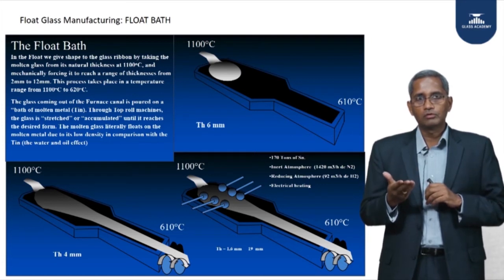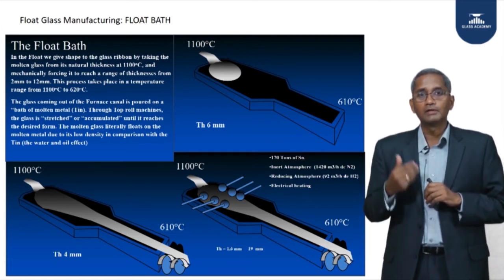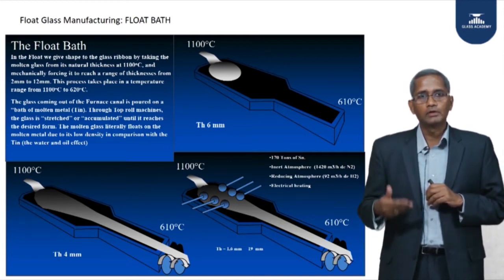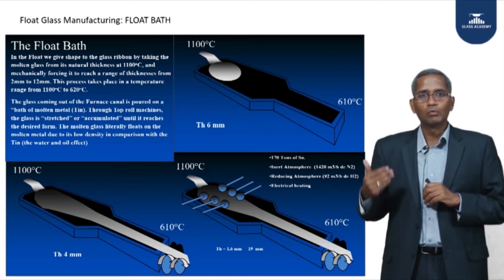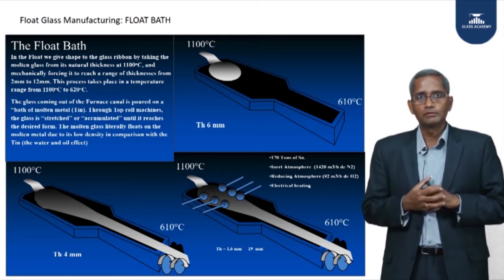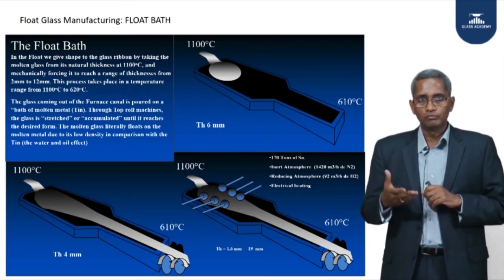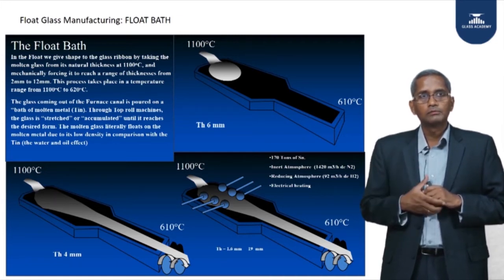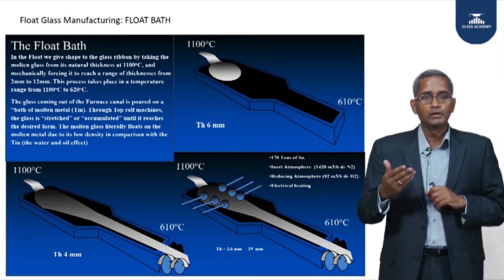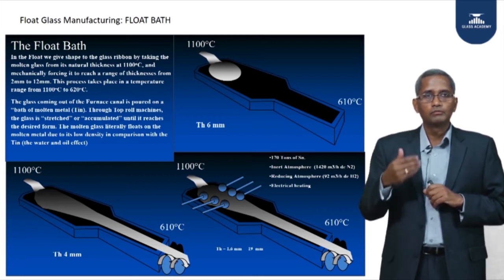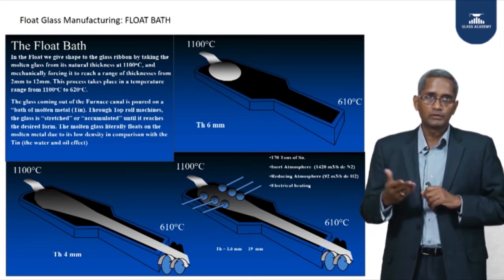Tin's vaporization temperature at 2300°C is much higher than our highest operating temperature of 1100°C, and tin's melting point at 231°C is much lower than the lowest operating temperature of 610°C at the end of the float bath. Tin, chosen also for its availability and price, with 200 to 250 tons poured into the float bath depending on its size before startup.